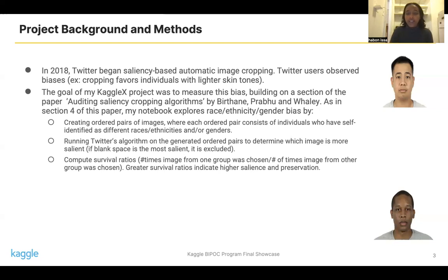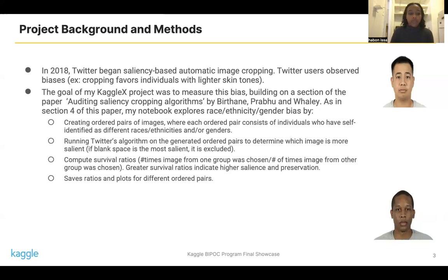As you can imagine, I generate many of these ordered pairs. An example survival ratio might be the number of times the image from a group of Black males is chosen compared to the number of times an image of a group of white females is chosen. I save these ratios, which is a metric for bias that Twitter shows. I also save information for plots for the different ordered pairs so that we can visualize different preferences later on.